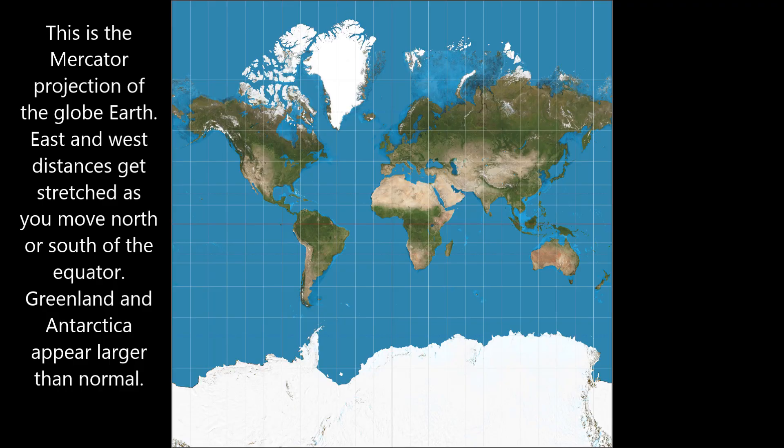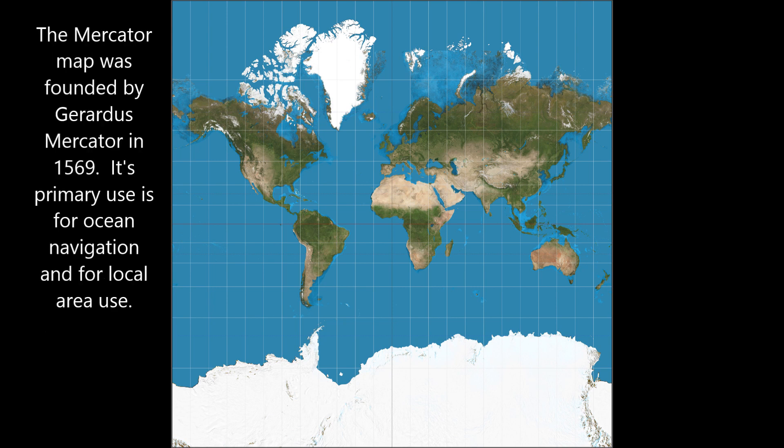This is the Mercator projection of the global earth. East and west distances get stretched as you move north or south of the equator. Greenland and Antarctica appear larger than normal. The Mercator map was founded by Gerardus Mercator in 1569. Its primary use is for ocean navigation and for local area use.